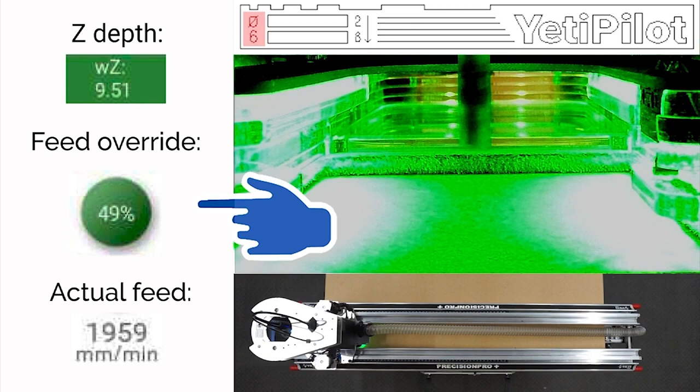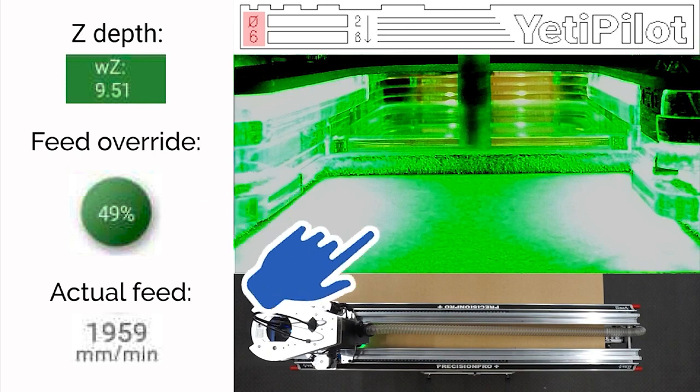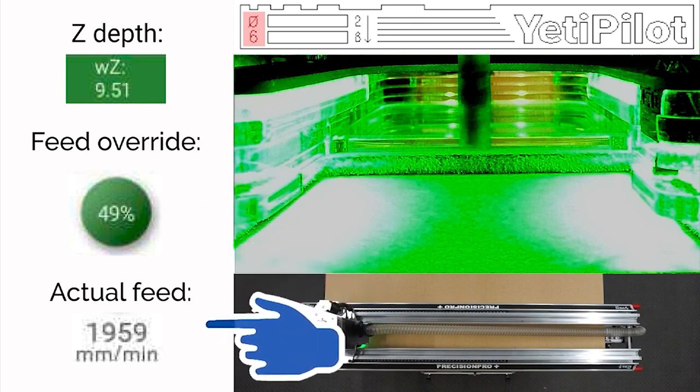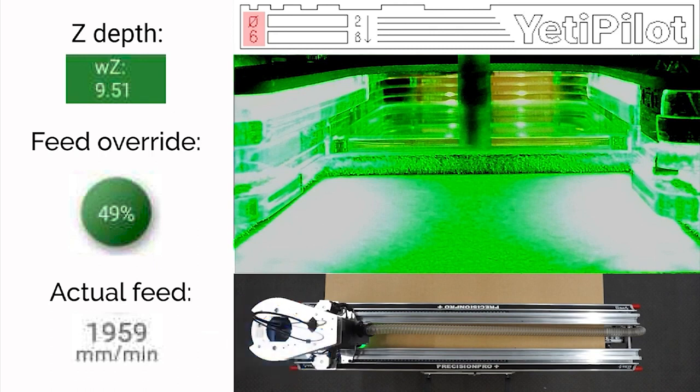Feed is how quickly SmartBench moves the cutter in the XY plane and feed override is a way of slowing the machine down or speeding it up. If you see 50% you know it's only allowed to go at half speed. If you see 200% you know SmartBench is allowing it to go at double the speed through the material. And actual feed is the number of millimeters per minute that the cutter is moving. Okay let's go.